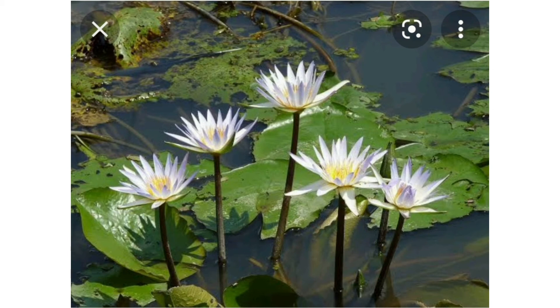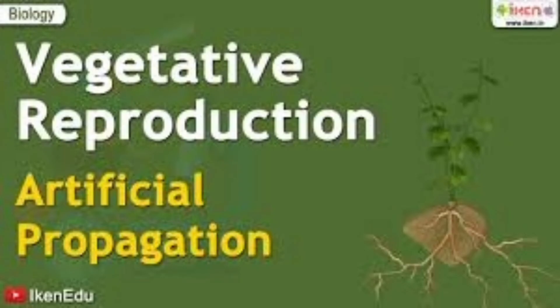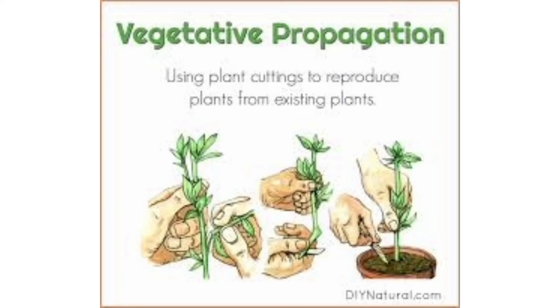The next topic is new plants from roots, stem, and leaves. All kinds of plants do not grow from seeds. In some cases, new plants are formed from the roots, stem, or leaves. This is known as vegetative reproduction.